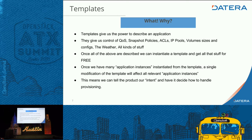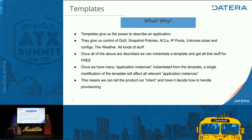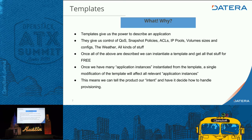Templates first give us the power to describe an application. They give us control of quality of service, snapshot policies, ACLs, IP pools, volume sizes and configs. It gives us control of a ton of stuff for that particular application. Once you've described all of these things — normally you'd have to describe them for individual volumes — in this case you describe them for the application, and it can be per volume within that application. You get all of that stuff for free every time you instantiate it.